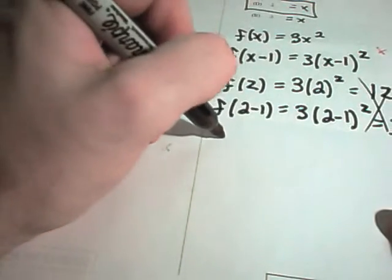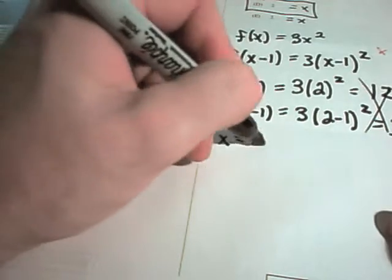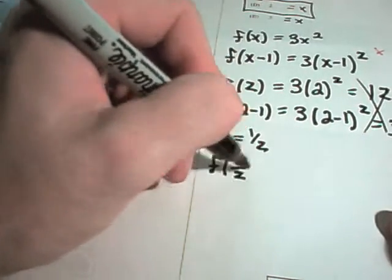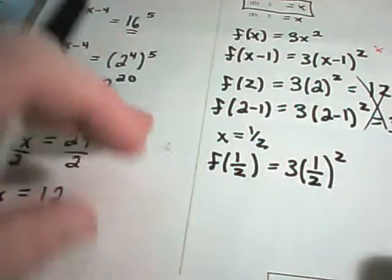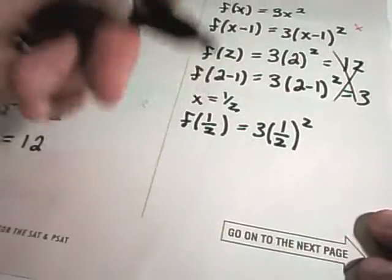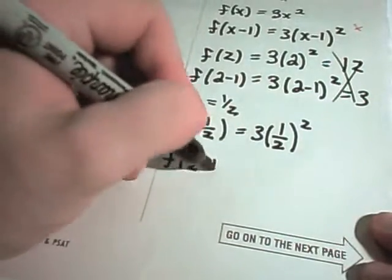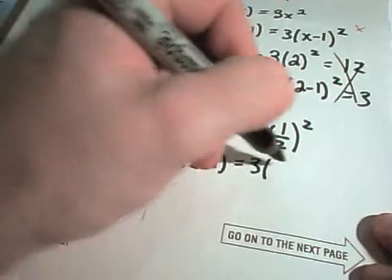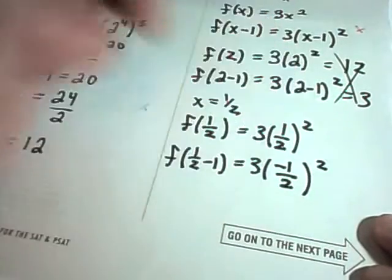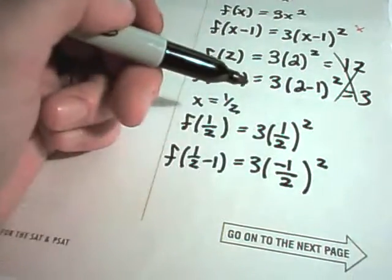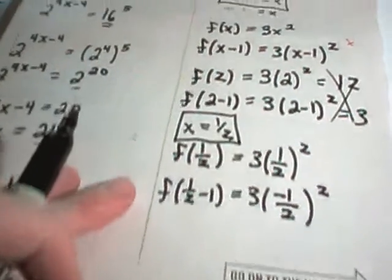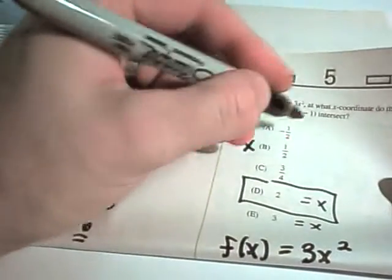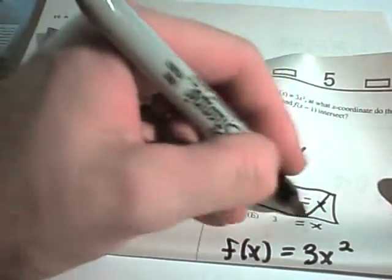And you could basically just keep checking these. Let's try x equals 1 half. So here you'll get f of 1 half being 3 times 1 half squared. And then if I plug it into the x minus 1 version, I'll get 1 half minus 1. But now I'll get 3 times negative 1 half squared. But since I'm squaring them, they're both going to turn out to be positive in any case. So it looks like x equals 1 half is going to be the one that gives you your solution. So x equals 1 half is our answer.